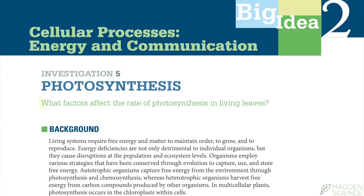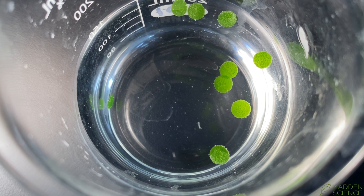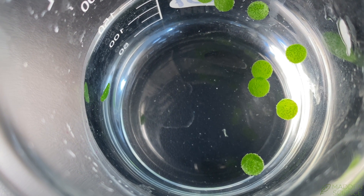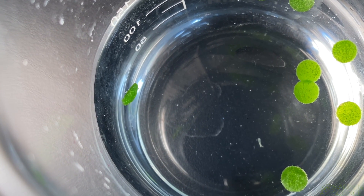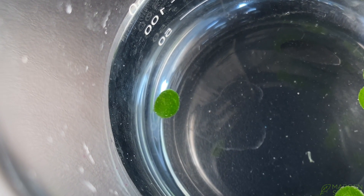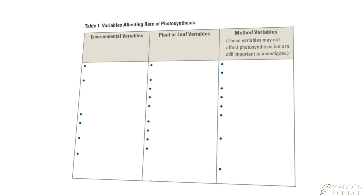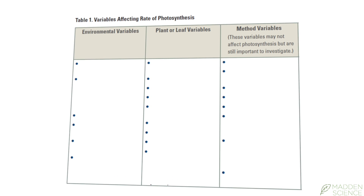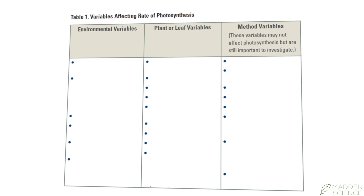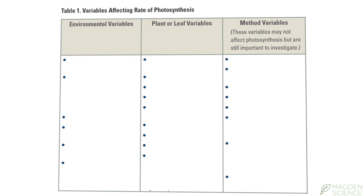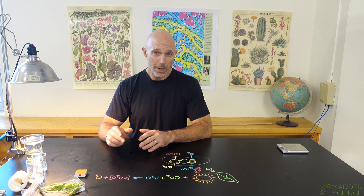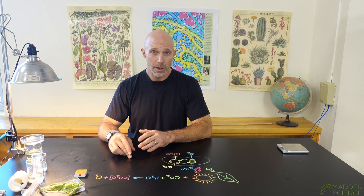Going back to the title — what factors affect the rate of photosynthesis in living leaves — we see both rates, covered here as oxygen is produced, and different factors. These factors fall into one of three groups: environmental variables, plant or leaf variables, and method variables. Go ahead and pause the video and see how many of those you can come up with on your own.